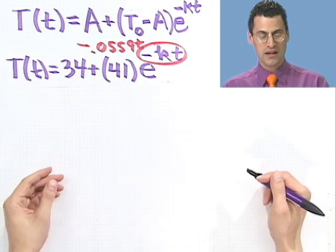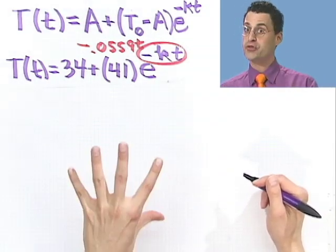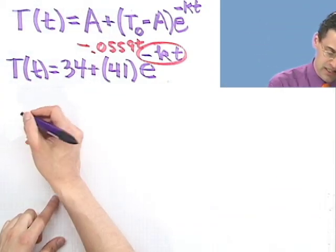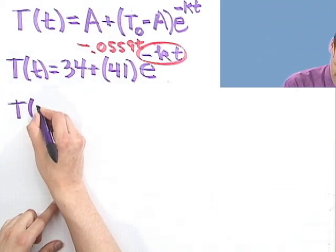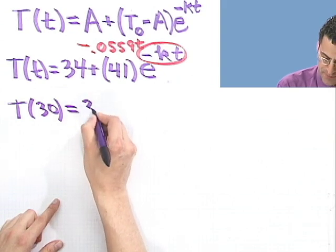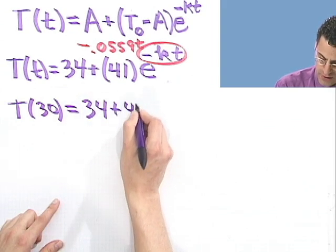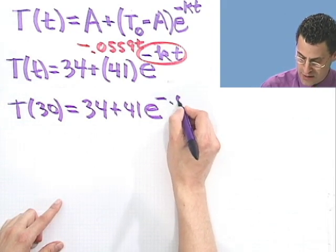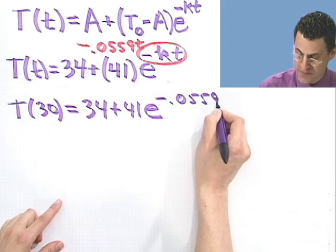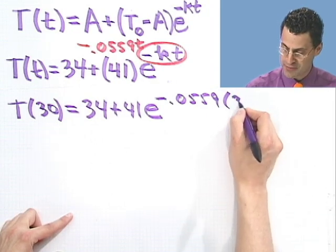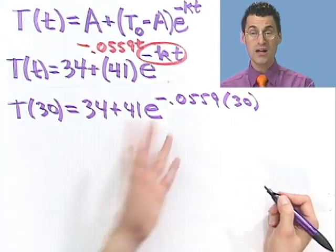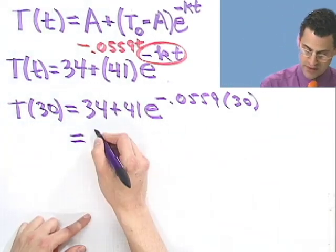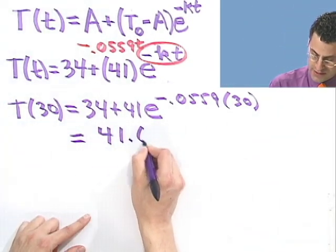For example, the first question I want to know is, what will be the temperature after 30 minutes? Well, that says, what's the temperature 30 minutes later? So that's just T of 30. So I plug in 30 for little t, and what do I see? 34 plus 41, e to what power? Well, e to the power minus .0559, that's the constant we just found, multiplied by 30 minutes. So multiplied by 30. And you can use a calculator to actually compute that with the exponential function there. And you'll see 41.6 degrees.